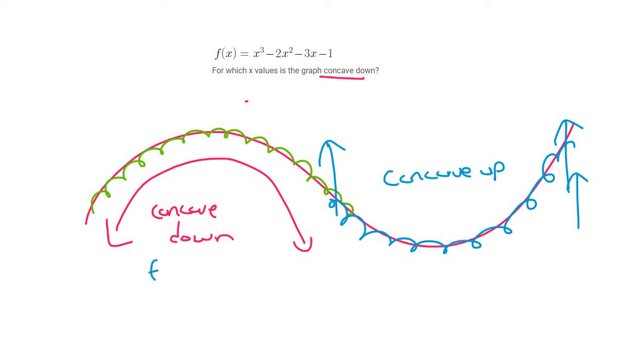Now, to find these points, this is where the second derivative is negative if it's concave down, and it's where the second derivative is positive, concave up.